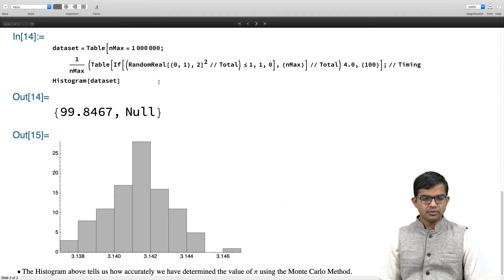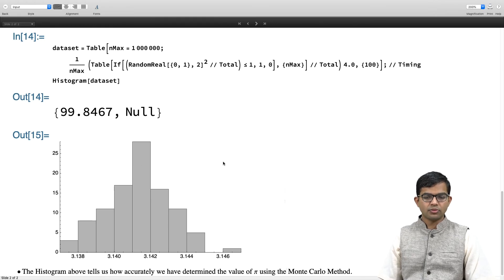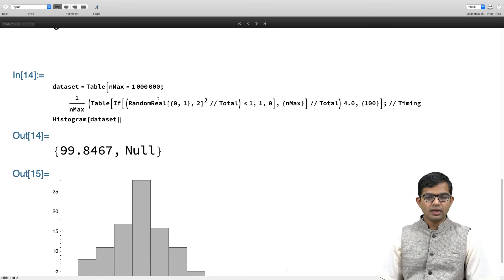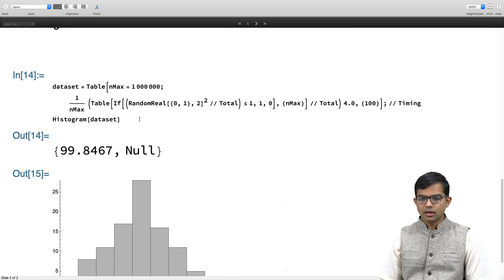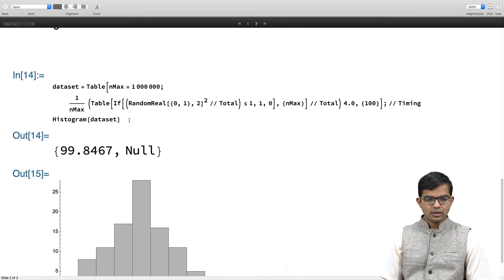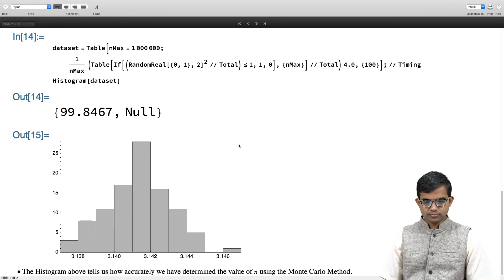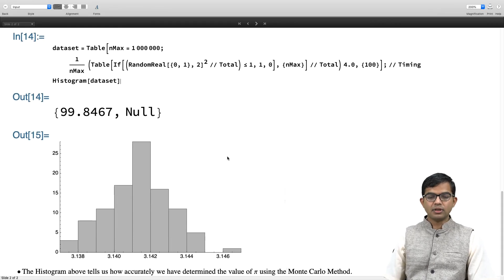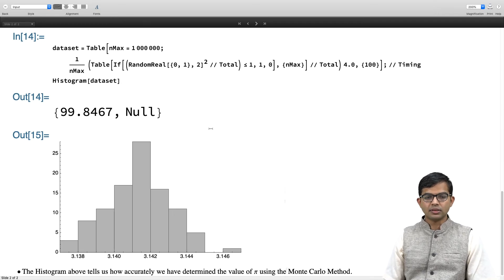You see that it is a histogram. I have a dataset with lots of numbers which are crowded around this 3.14. So not only have I just got an estimate of this, but it also gives me a histogram in the end. It tells us how accurately we have determined the value of pi using the Monte Carlo method.